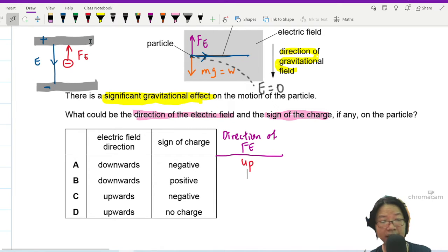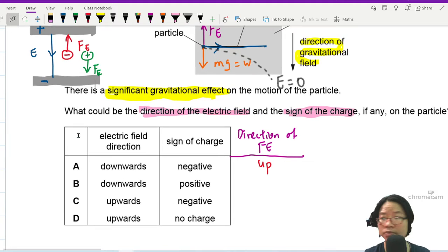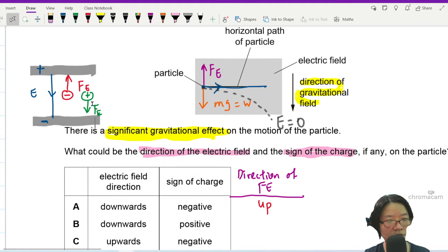Which means if I put a positive charge inside this parallel plate, this positive charge will be downwards. Because the direction of electric field is downward, meaning the top plate must be positive and the bottom plate must be negative. Electric field lines go from positive to negative. So FE is downwards. So down.